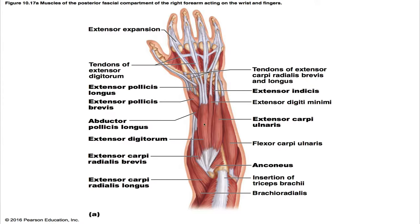The extensor digitorum lies medial to the extensor carpi radialis brevis. A detached portion, called the extensor digiti minimi, extends to the little finger. Its origin is the lateral epicondyle of the humerus, and its insertion is by four tendons into the extensor expansion and the distal phalanges of fingers 2, 3, 4, and 5. Its action is that it is the prime mover of finger extension; it also extends the wrist and can abduct the fingers — as when you're flaring your fingers. It is innervated by the posterior interosseous nerve.